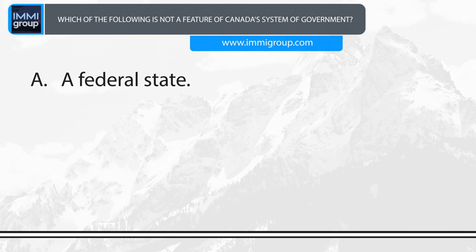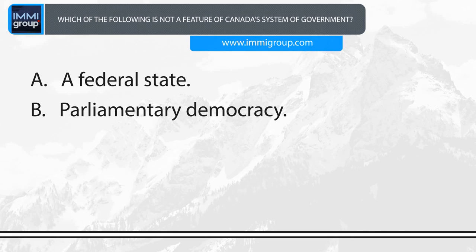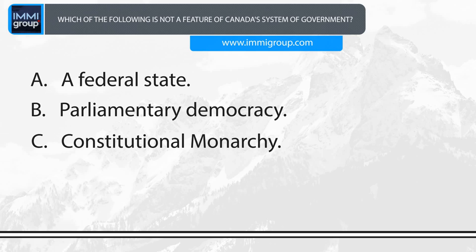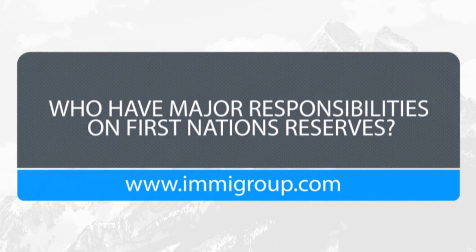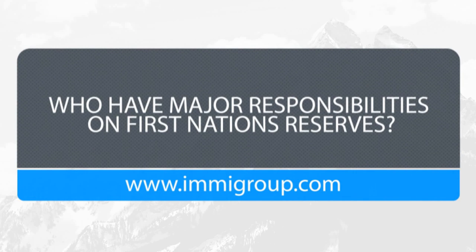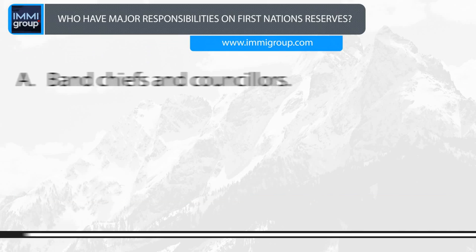Which of the following is not a feature of Canada's system of government? A. A federal state. B. Parliamentary democracy. C. Constitutional monarchy. D. Dictatorship. Answer: Dictatorship.